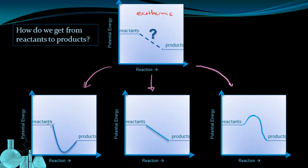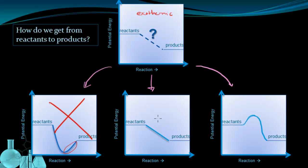In scenario one, the energy went down first and came back up. Going down makes sense because it's exothermic, but it doesn't really make sense that there'd be a gain in energy halfway through the reaction — suddenly an input of energy. It doesn't make sense, so we're not going to consider this one. Now for the second one — a steady gradual change in energy — maybe; the energy needs to go somewhere, so we'll put a question mark on that one for now.